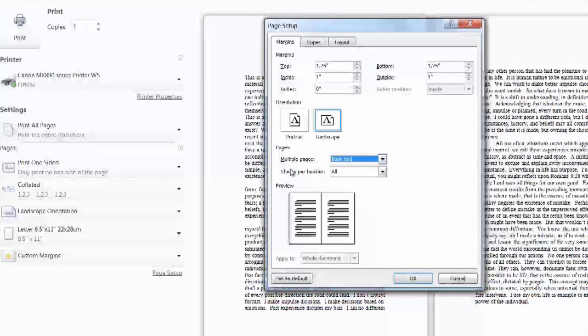The second option under the book fold is sheets per booklet, which the default is all. You can also select smaller amounts, four, eight, twelve.